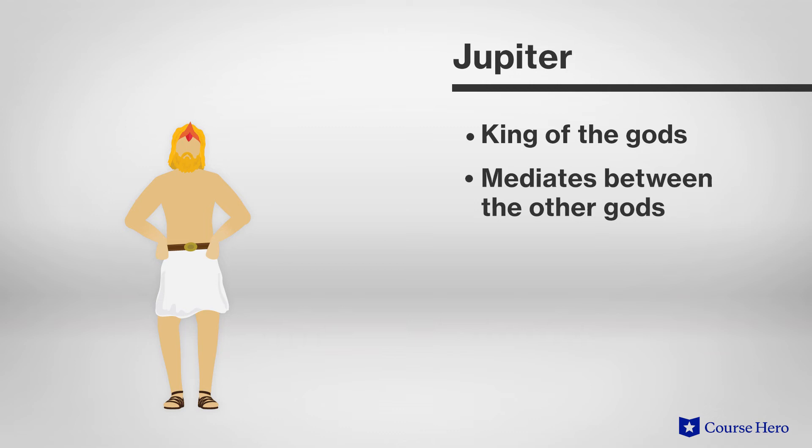Jupiter is the king of the gods, and he manages other gods and mediates between them when there's conflict. He is responsible for ensuring that what the fates have predicted comes to pass sooner or later.